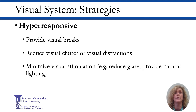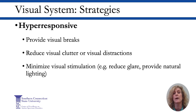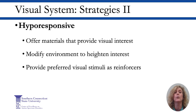Strategies to assist a student who is hyper-responsive to visual input include providing periodic visual breaks, especially after reading or other written work. It may be helpful to reduce visual clutter and distractions on the walls and in the immediate work environment, including reducing glare, and to cover half of the page on worksheets to minimize visual input. For students who are hypo-responsive to visual input, it may be helpful to add visual interest to written materials, including highlighting important work and providing color to worksheets. These students may benefit from adding bright colors and light to the work area, and preferred items such as spinning or light-up toys could be offered as reinforcers.